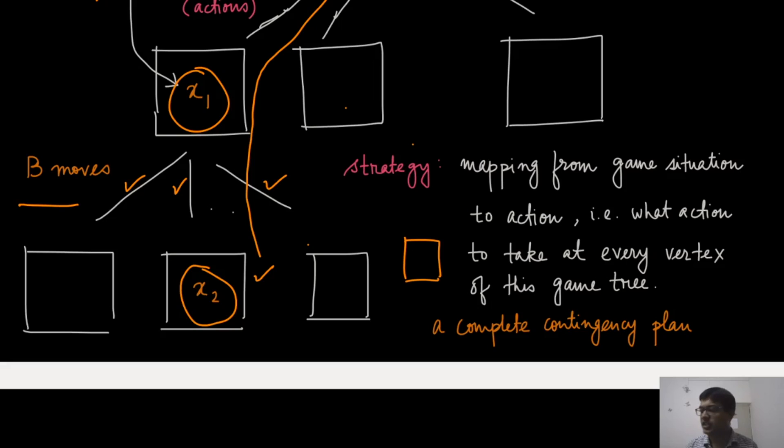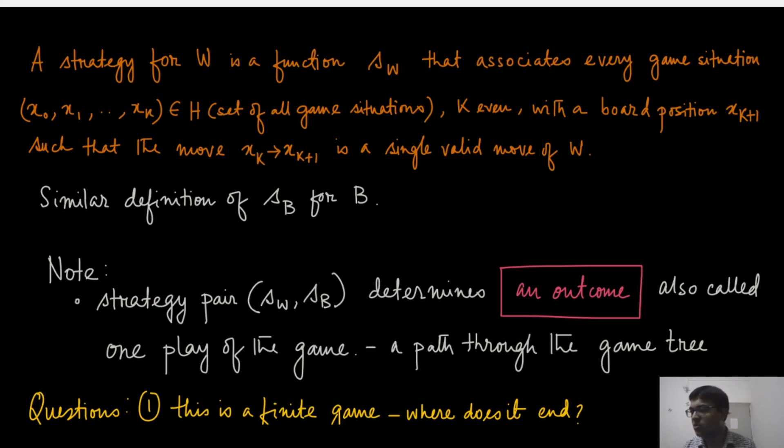But strategy is the complete plan. That is why it is sometimes called the complete contingency plan. Given any game situation, the strategy will automatically tell you what is the action that this player is going to take. So, it is more general in that sense. To define the strategy of a player, let us say the white player, we are going to use this notation S_W that associates every game situation like this. This would be one game situation. Sometimes this is also called the game history. And when k is even, with a particular board position, x_{k+1}. So, I can just take S_W and give it a specific game situation, x_0 starting from x_k and it will give me an action. Action which will take me from x_k to x_{k+1}.